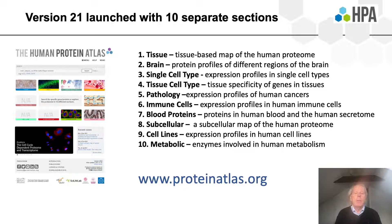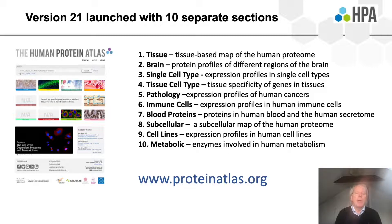The 10 sections are: tissues, the brain, single cell types, tissue cell types, a pathology section, a special section for immune cells, blood proteins, the subcellular section, human cell lines, and finally the metabolic enzymes. One can then explore the information in these 10 different sections.